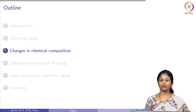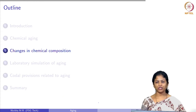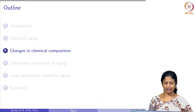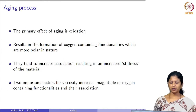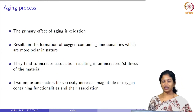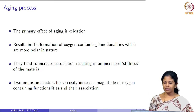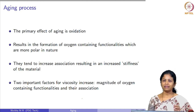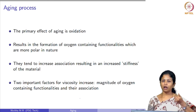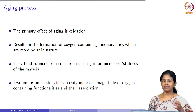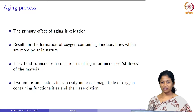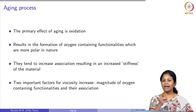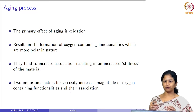Next we look at changes in chemical composition at different stages. The primary effect of aging is oxidation — the uptake of oxygen molecules and formation of oxides. In bitumen there are a number of functionalities, and these functionalities absorb oxygen molecules and become more polar in nature. These polar points act as sites for association of molecules, creating strong interactive forces.